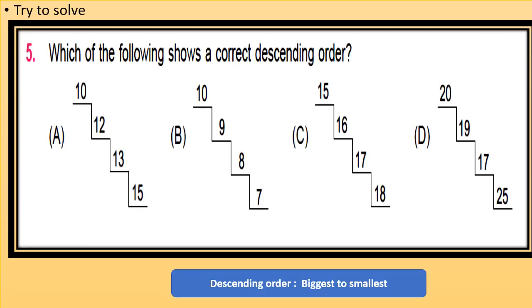Question number 5 is: which of the following shows a correct descending order? Now descending order is biggest to smallest. See the options A, B, C, and D and choose the correct descending order.